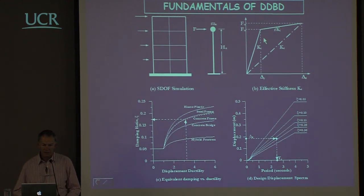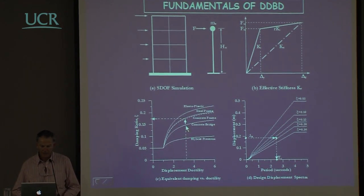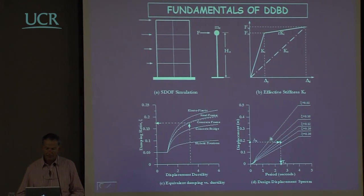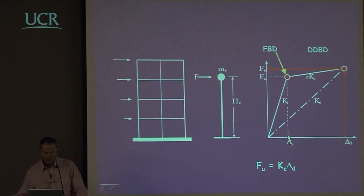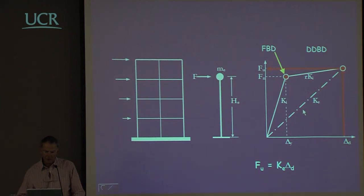As far as everything else is concerned, the procedure makes no difference between a building or a bridge. We still use an effective stiffness model, the appropriate relationship between equivalent viscous damping and ductility, and the same response spectra. The procedure is to determine what the design displacement is and therefore calculate the effective stiffness and, having determined that, the required strength.